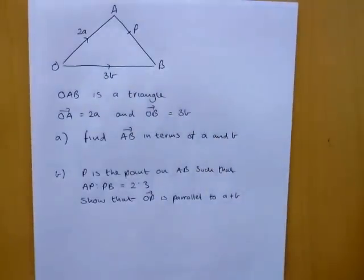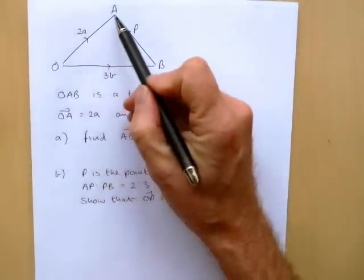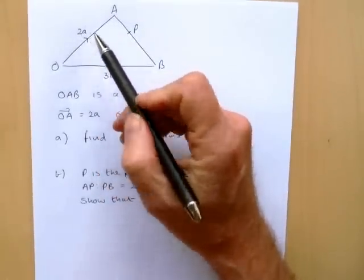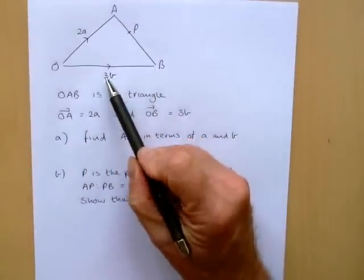OK, so in this question we've been given the triangle OAB. We've been told that the movement from O to A is given by the vector 2A and the movement from O to B is given by the vector 3B.